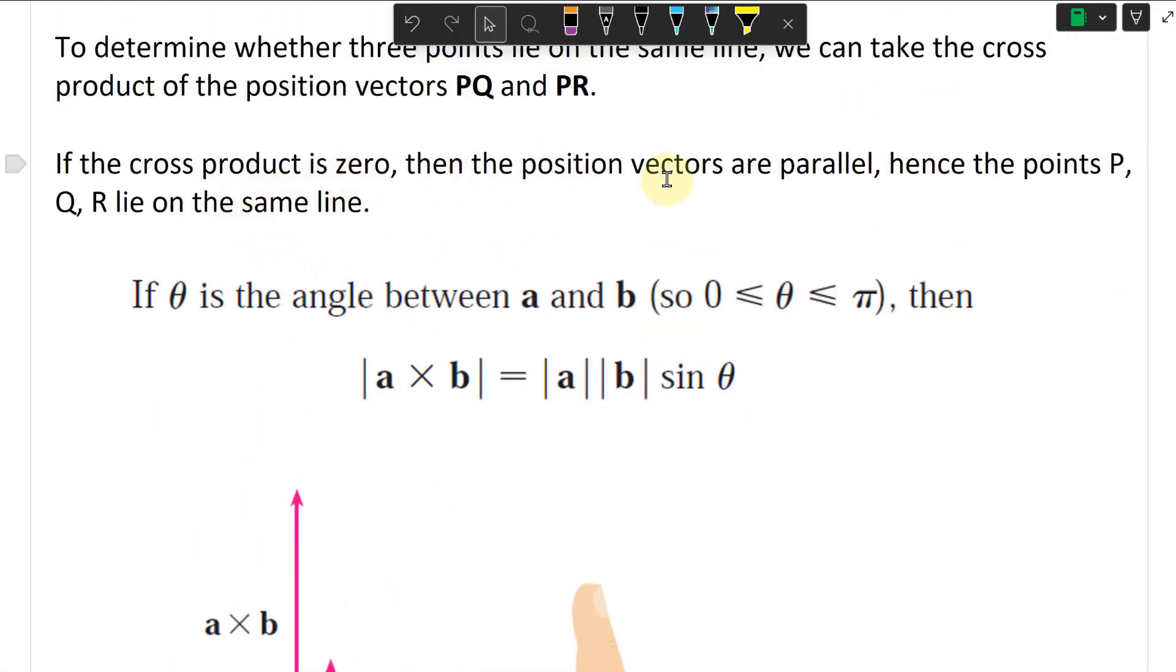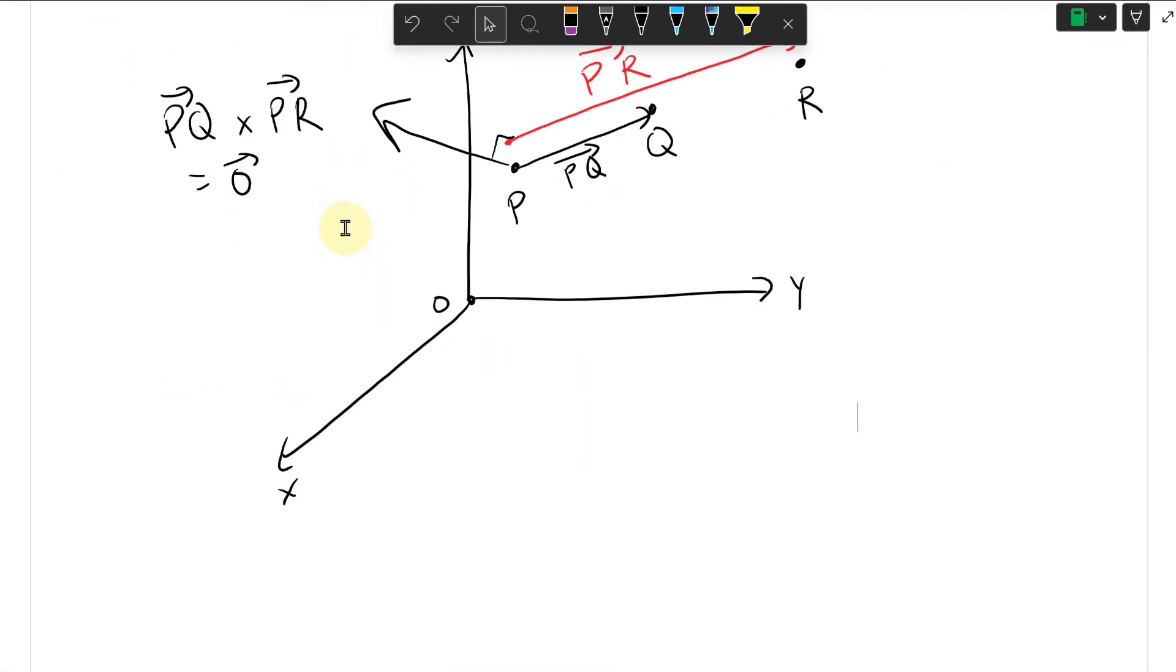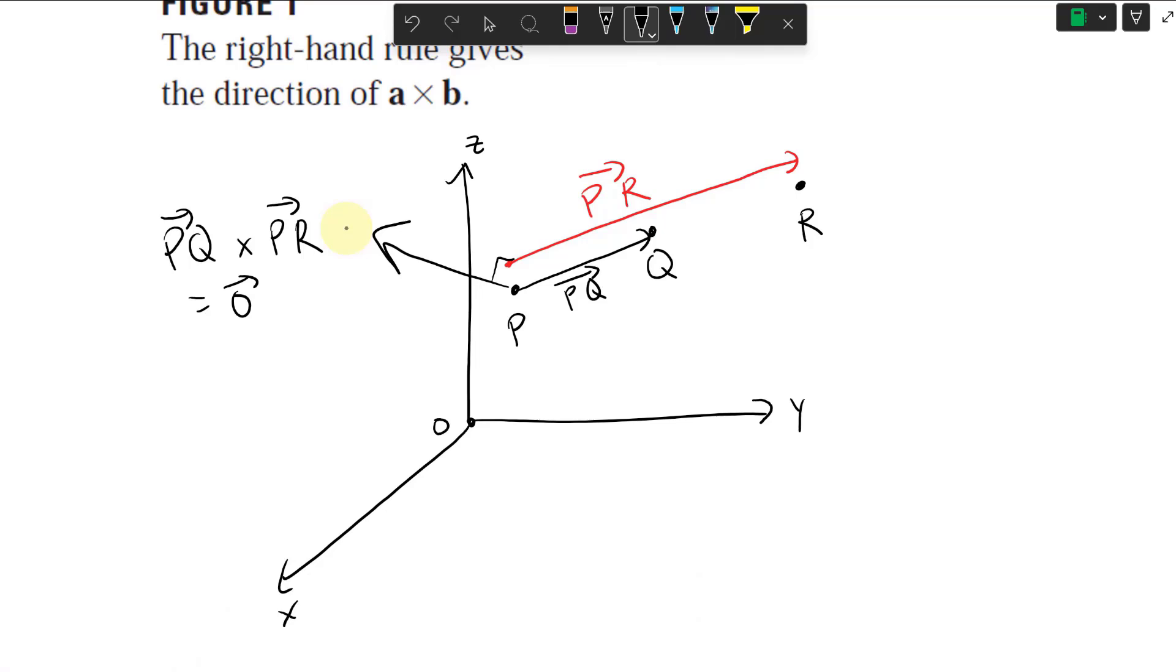So if cross product is zero, then the position vectors are parallel. Hence the points P, Q, and R are on the same line. So they're all exactly on the same line like this. So I'll just erase that. So epic stuff.